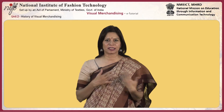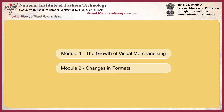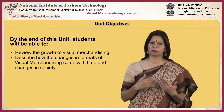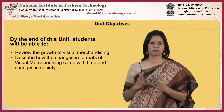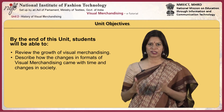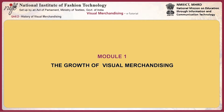This unit deals with understanding the growth in visual merchandising and how and where it began. It also deals with understanding various formats of stores. This unit comprises two modules and a final review section. By the end of this unit, students will be able to review the growth of visual merchandising and describe how changes in formats came with time and changes in society.